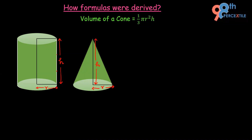Hi students, welcome back to another part of our new series: how formulas were derived. In this part, we will see how the volume of a cone is 1/3 times π r² h.